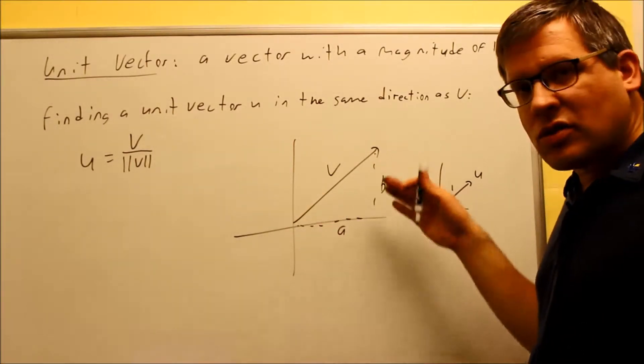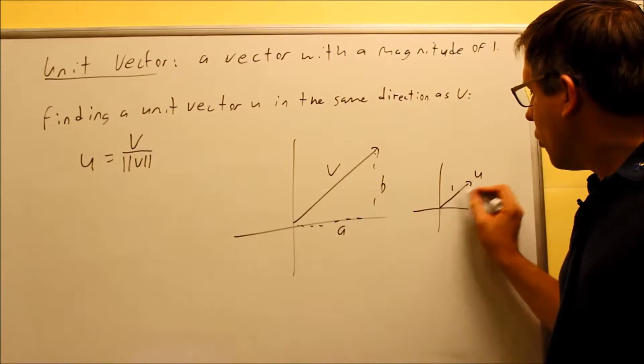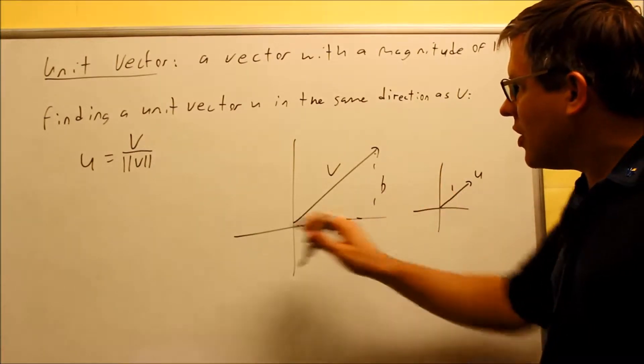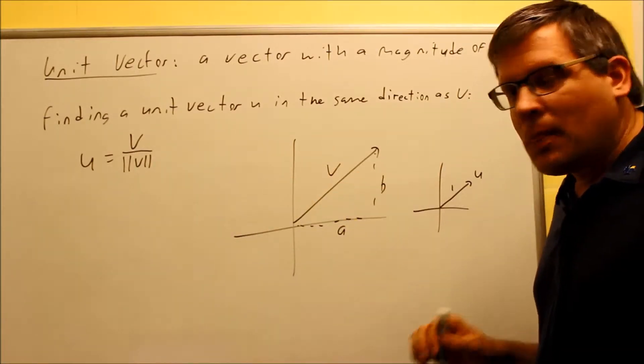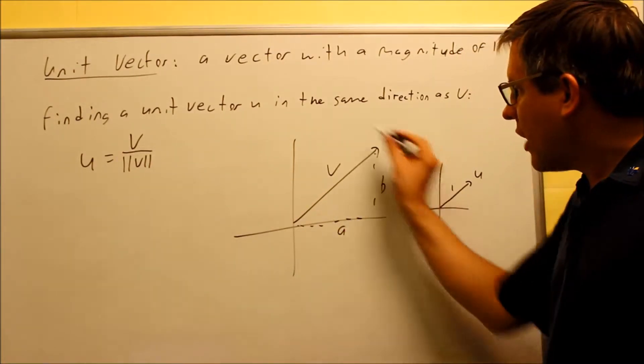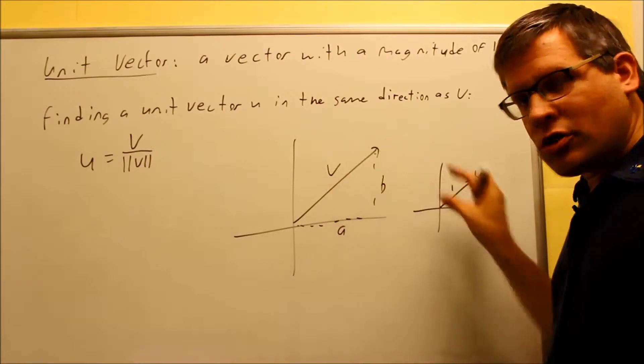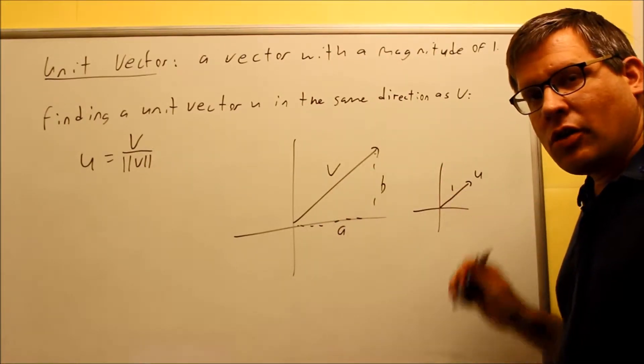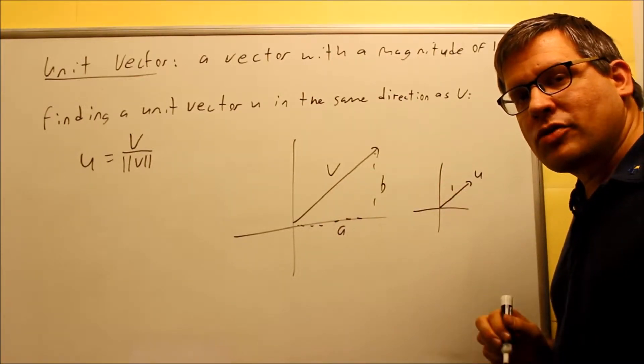So the formula that allows us to find a unit vector with a length of 1 in the same direction as V is this one right here. You take V divided by its magnitude, and if you follow that formula, that allows you to take a vector normally this long here and shrink it down into one that has a length of 1. So now let's take a look at a couple examples.